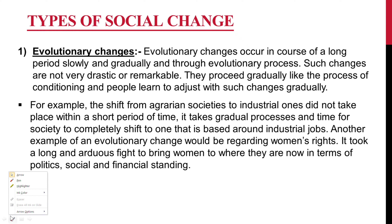There are two types of social changes: evolutionary changes and revolutionary changes. Evolutionary changes occur over a long period, slowly and gradually. Such changes are not very drastic or remarkable; they proceed gradually, and people learn to adjust with such changes gradually.